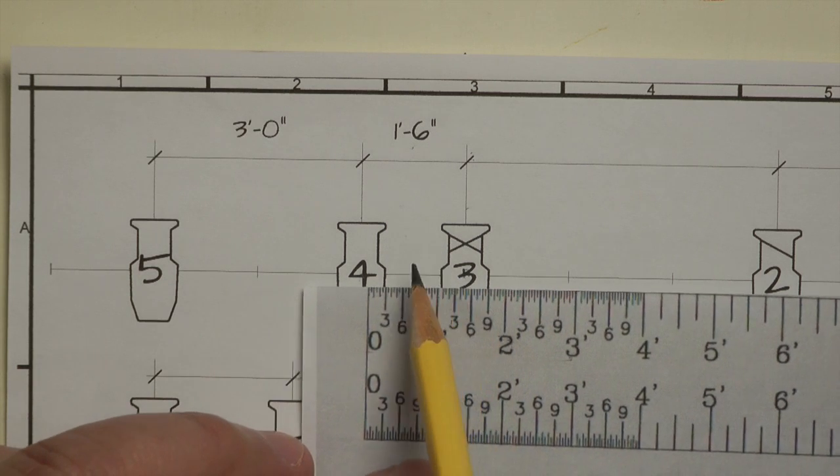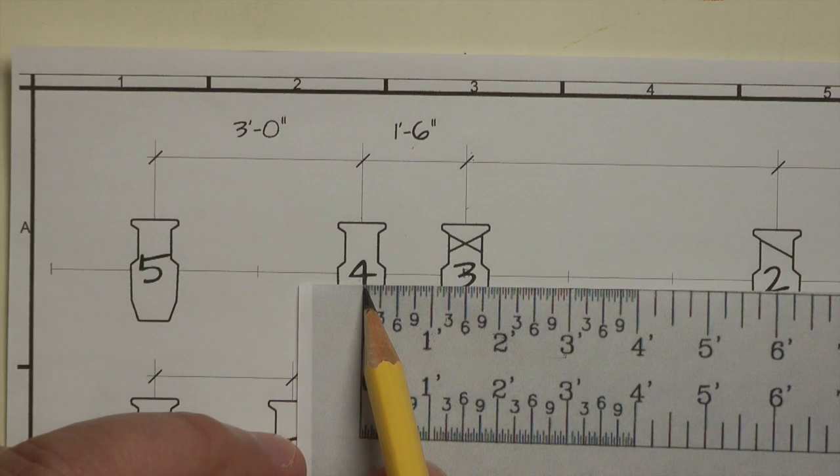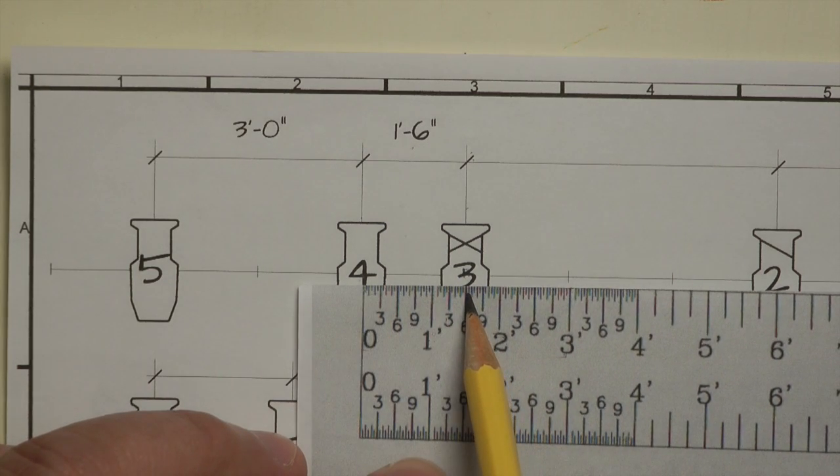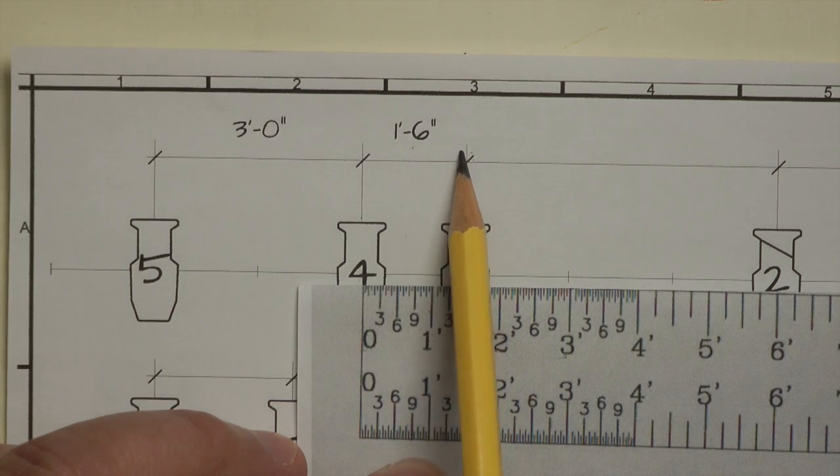This one, we move this over, put zero in the middle of the fourth unit, and the middle of the third unit is one foot six inches.